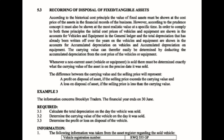According to the historical cost concept, the value of fixed assets must be shown at the cost price of the asset in the financial records of the business. However, according to the prudence concept, it must also be shown at the most realistic value at a specific time. In order to comply with both principles, the initial cost price of vehicles or equipment is shown in the actual vehicles and equipment accounts in the general ledger, and the total depreciation already written off over the years is shown in the accumulated depreciation accounts.